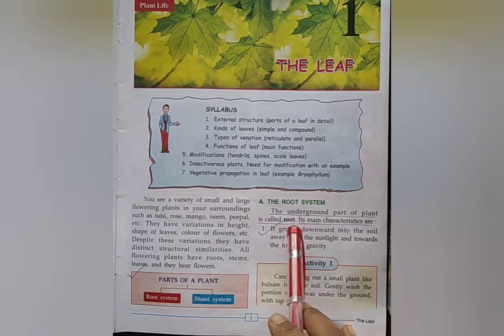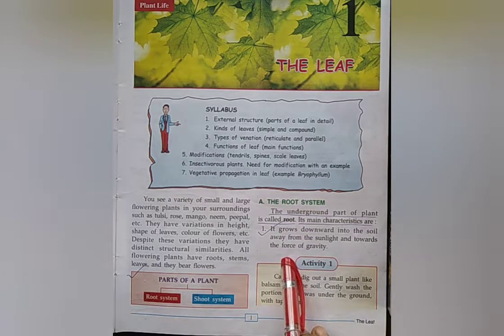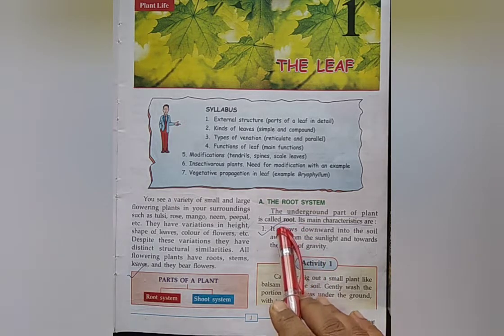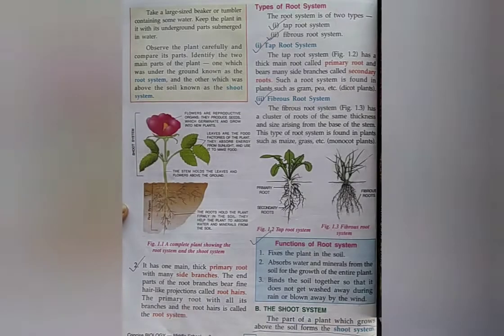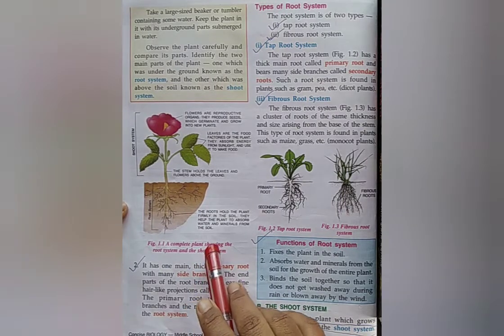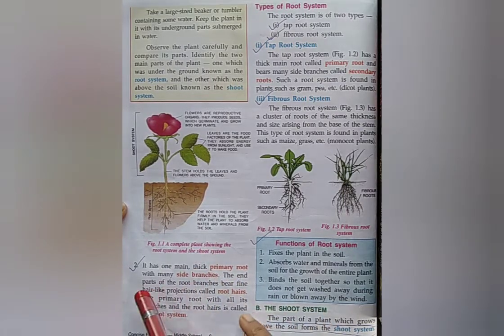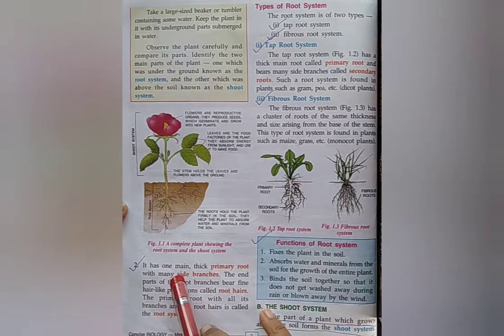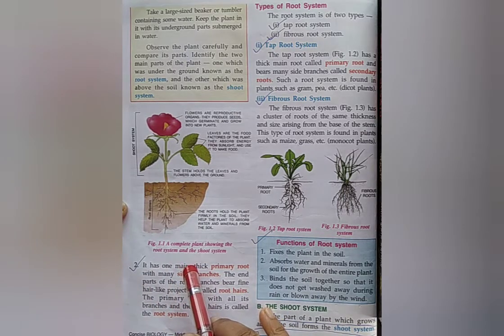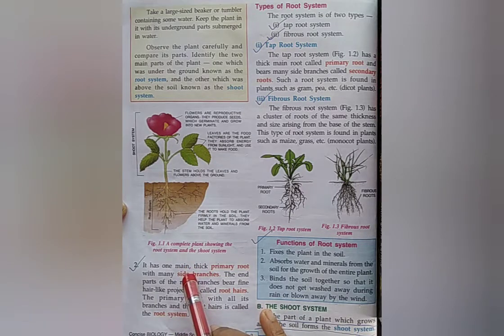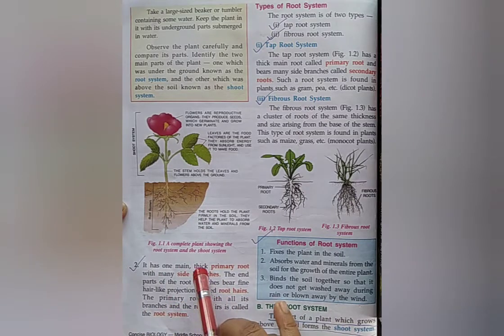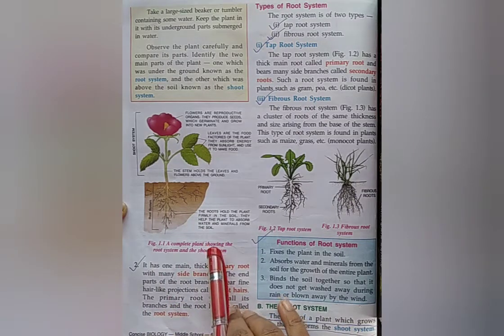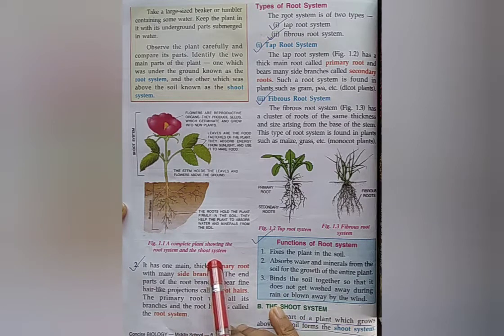Write down the characteristics of root. Answer number one: It grows downward into the soil, away from the sunlight and towards the force. Number two: The main thick primary root with many side branches and the root hairs is called the root system.